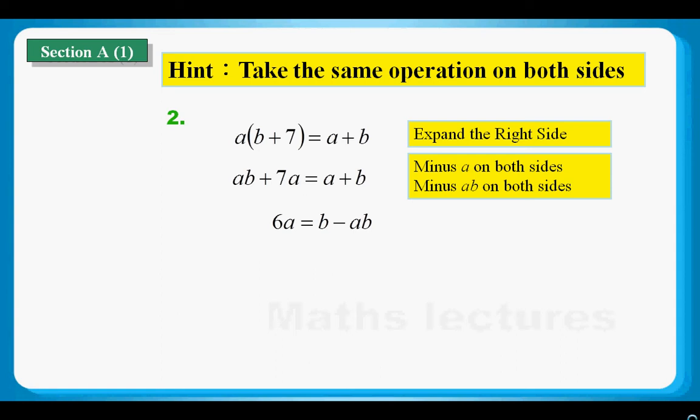And then, what we have is, we got all the Bs together on one side. Other non-B terms to the other side. Factorize the left side.